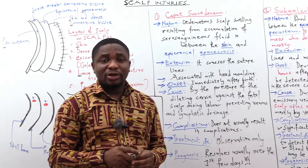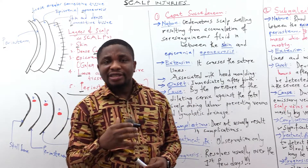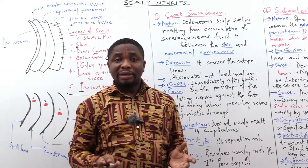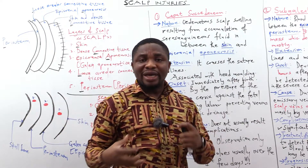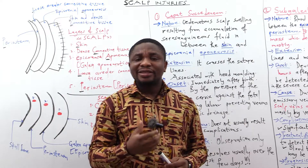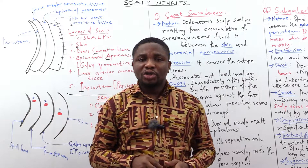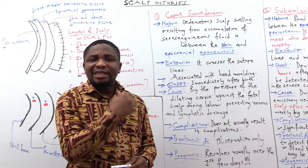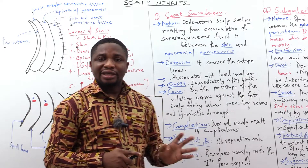Any swelling resulting from accumulation of fluid or blood in a space above the periosteum will definitely cross the suture line. If you are below the periosteum, the periosteum is continuous with the endosteum of the scalp bone, which limits the movement of the accumulation. So any swelling from accumulation below the periosteum will not cross the suture line, but any accumulation above the periosteum shall cross the suture line. For caput succedaneum, the swelling is above the periosteum — specifically between the skin and the gallea aponeurotica — so it crosses the suture line.